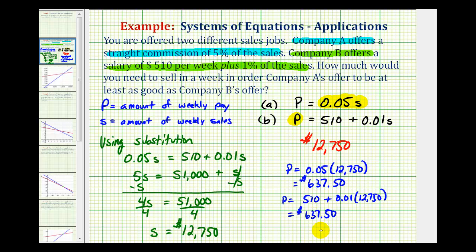Now going back and looking at these equations, this also tells you if you sell more than $12,750, then company A's offer of the straight commission is going to give you more weekly pay because you're earning 5% commission versus only 1% commission from company B.